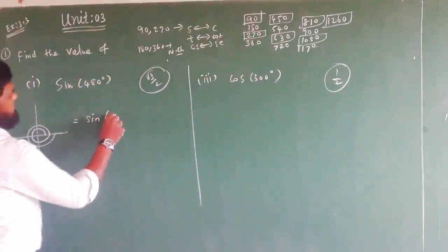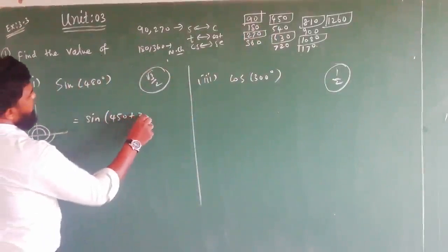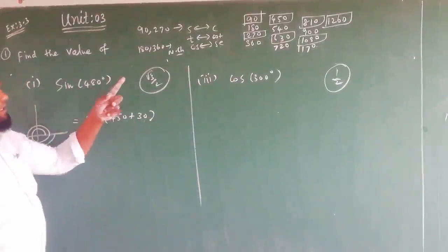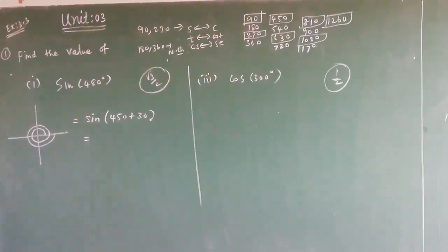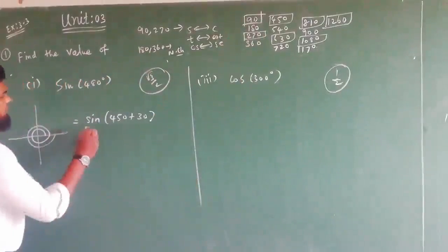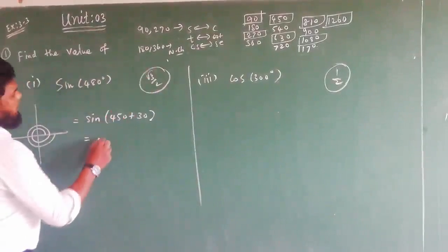Above 450 plus 30, 450 plus 30 equals 90. Now we get 480 degrees. Now it's 450 plus 30. It becomes cos, not sin.